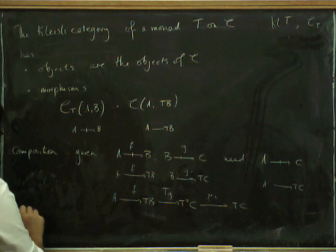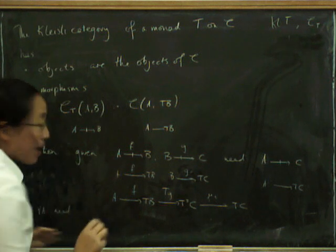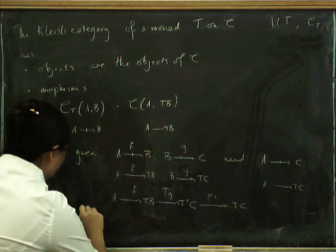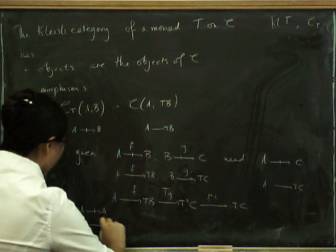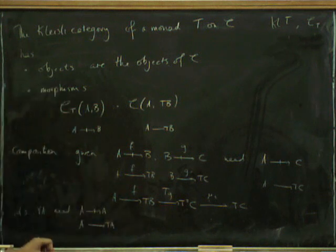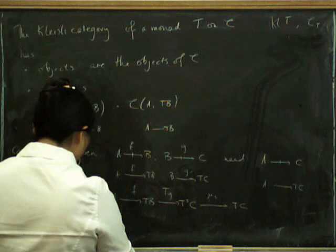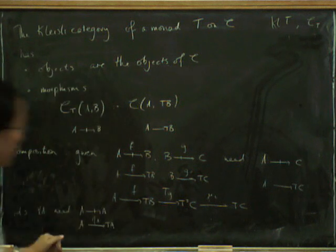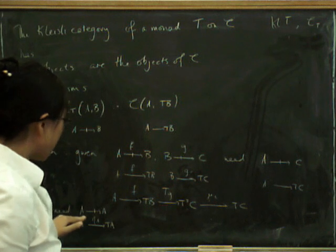What are the identities going to be? So for every object A, we need a map in the Kleisli category from A to A. And of course, that's a map in the actual category from A to TA. What could it possibly be? Yes, it's going to be η, the unit for the monad. Okay, so composition comes from μ, and the identities come from η.